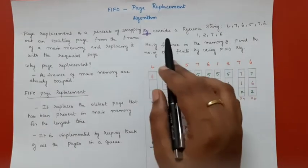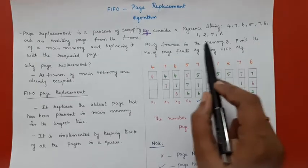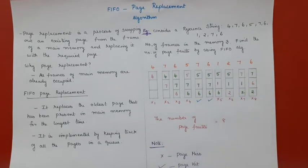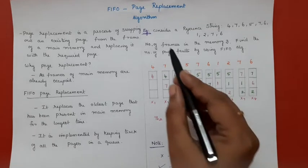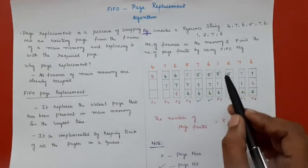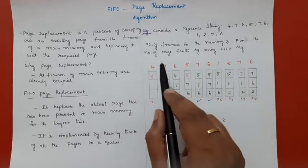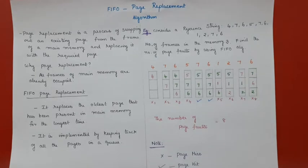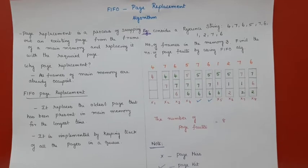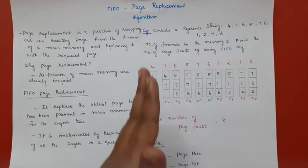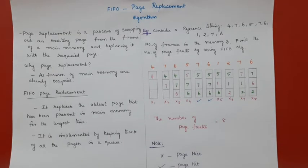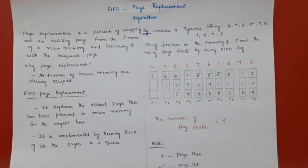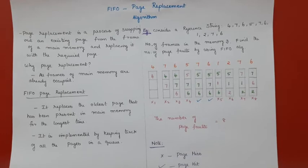Let's look at an example. We have a reference string — these are the set of pages going to come into main memory. The number of frames available in main memory is 3. We need to find the number of page faults using the FIFO algorithm. Initially, all three frames are free and available.